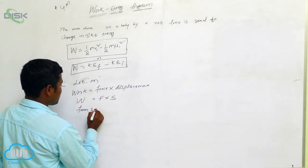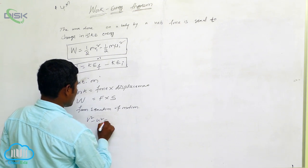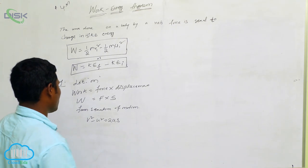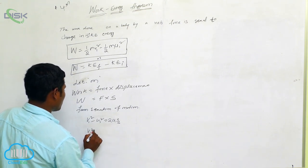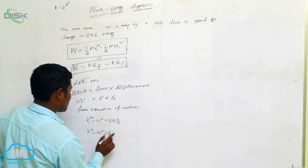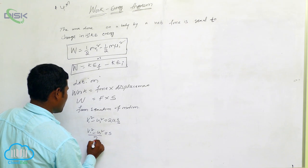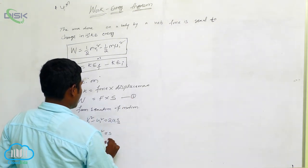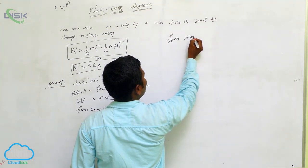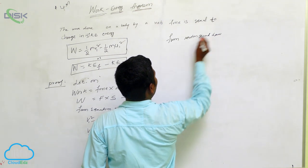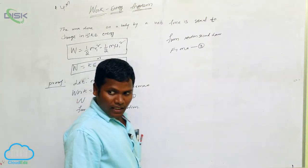From the equation of motion: v² − u² = 2as. Rearranging to get s: s = (v² − u²) / 2a. This is equation 2. From Newton's second law: F = ma. This is equation 3. Now substitute equations 2 and 3 into equation 1 (W = Fs).